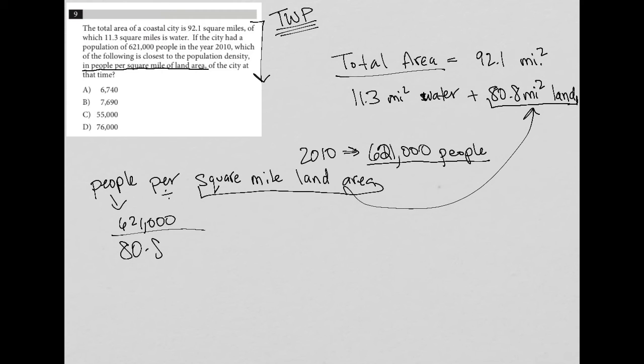So 80.8 square miles, and I think that's all they want us to do. So I'm just going to go straight to my calculator. My unit here is people. Go to my calculator and type in 621,000 divided by 80.8.